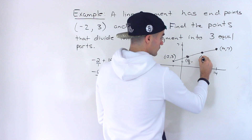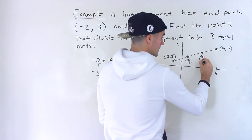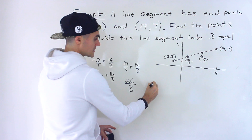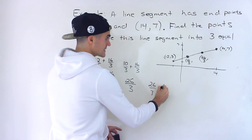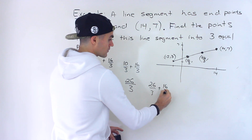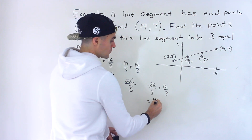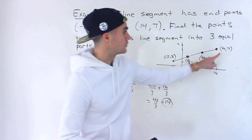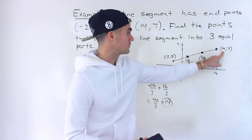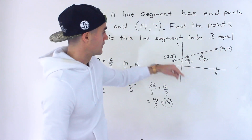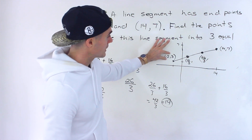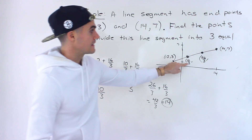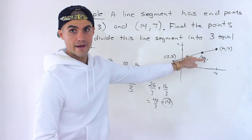Now that we have this distance, we take negative 2 and add 16 over 3. That's negative 6 over 3 plus 16 over 3, which gives us 10 over 3. So the x value of the first interior point is 10 over 3. Then we take 10 over 3 and add 16 over 3 to get 26 over 3 — that's the x value of the second interior point. We can check: 26 over 3 plus 16 over 3 equals 42 over 3, which is 14 — the original endpoint's x value. So from the starting x value we kept adding 16 over 3.